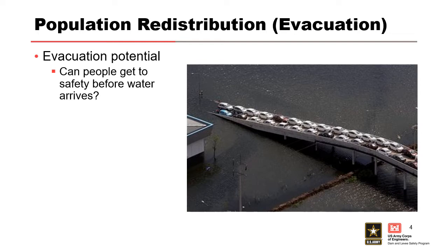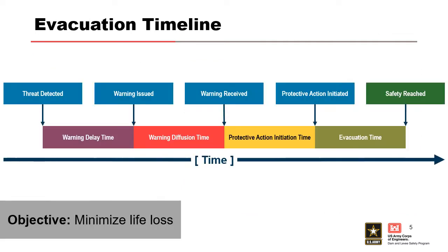What's our initial distribution of people? Where are they at? Will they be able to get out of harm's way, and how many? For those remaining, where are they going to be? You saw this evacuation timeline earlier this week. I want a clear and consistent message about this evacuation timeline because it's a really good way to think about the processes that lead to somebody taking protective action and trying to get to safety.